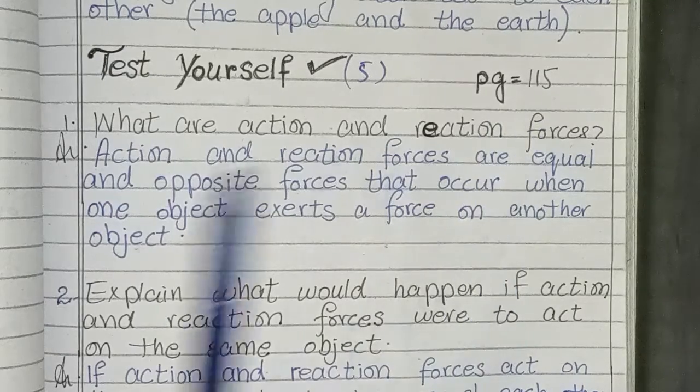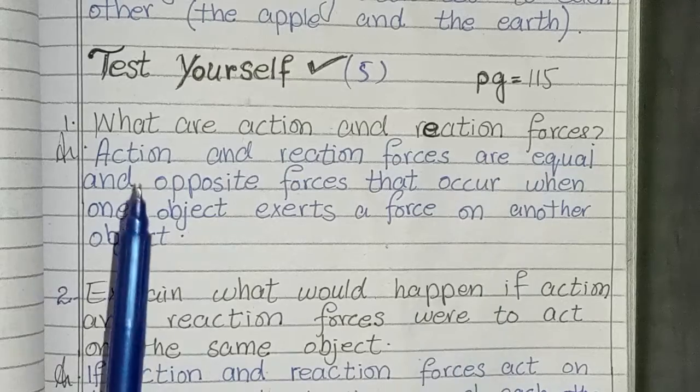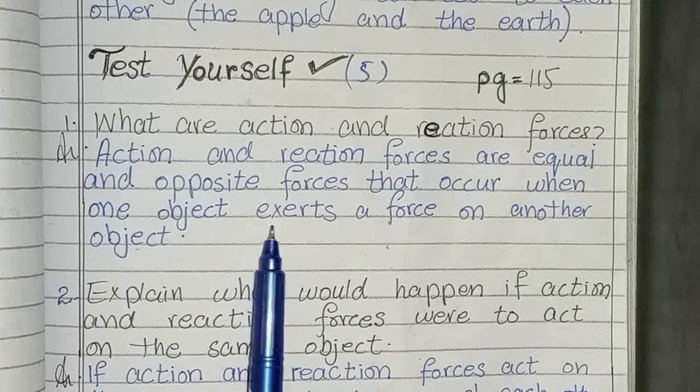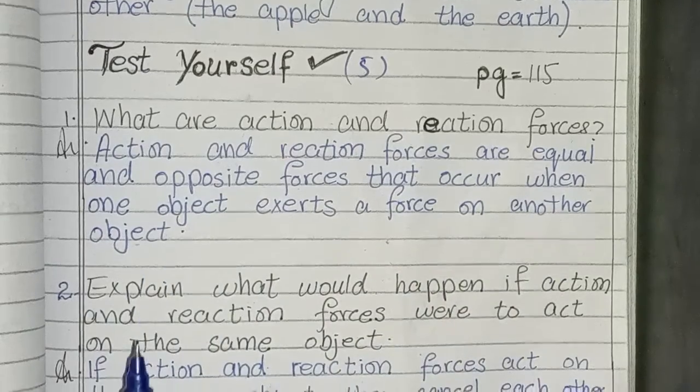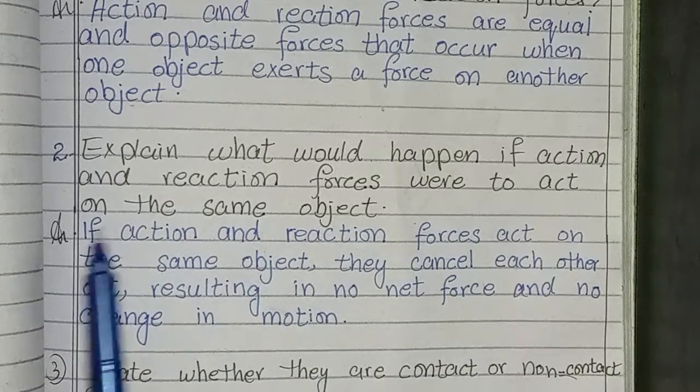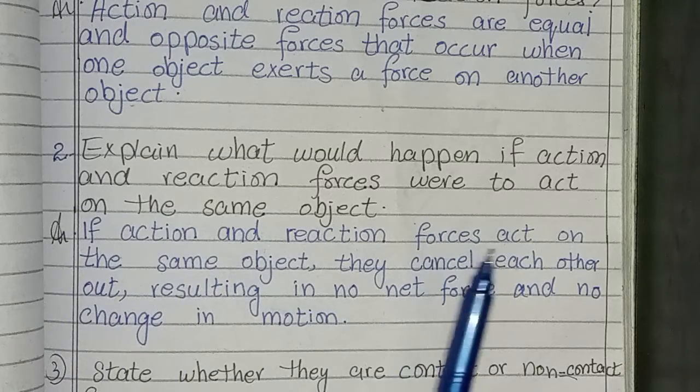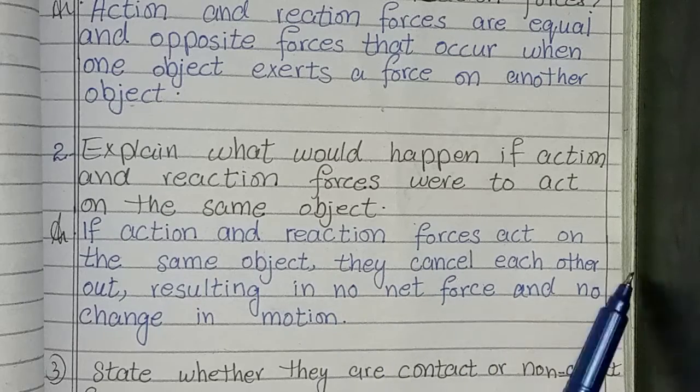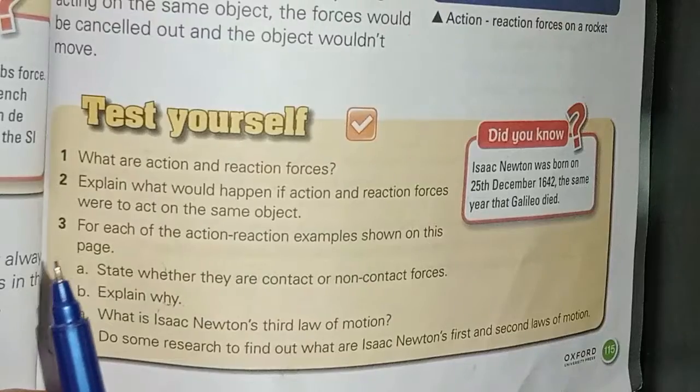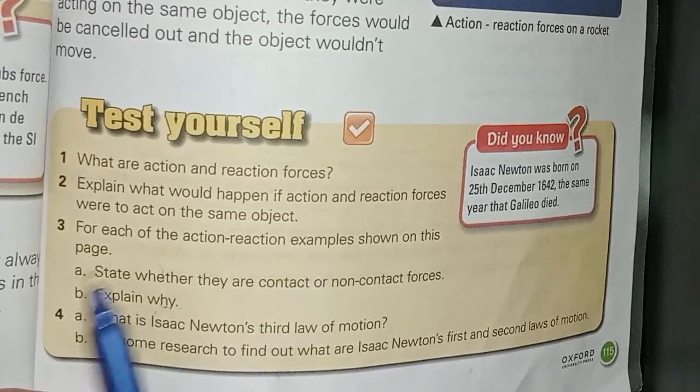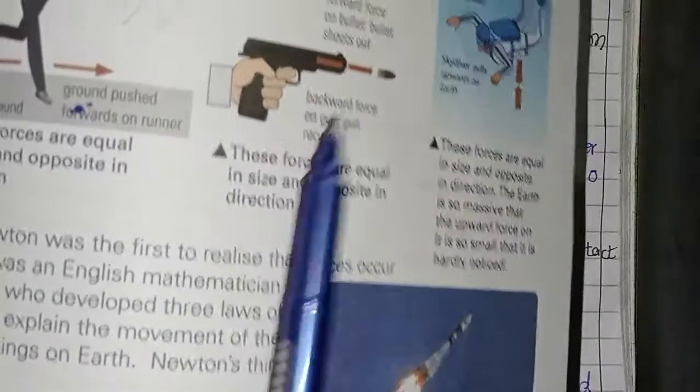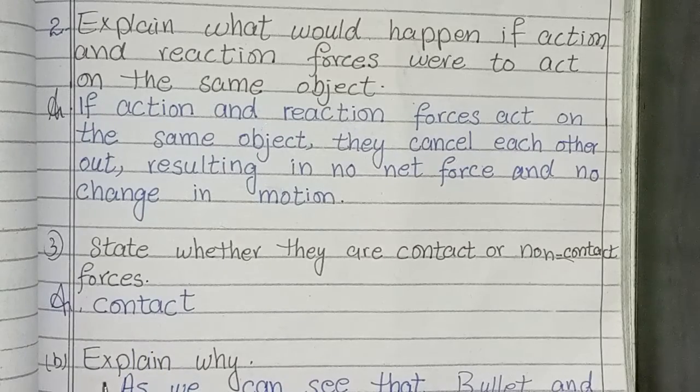Fifth test yourself, page number 115. First question: what are action and reaction forces? Action and reaction forces are equal and opposite forces that occur when one object exerts a force on another object. Second question: explain what would happen if action and reaction forces were to act on the same object. Answer: if action and reaction forces act on the same object, they cancel each other out resulting in no net force and no change in motion. Third question: for each of the action and reaction example shown on this page, state whether they are contact or non-contact forces. I have this example, this is a contact force.